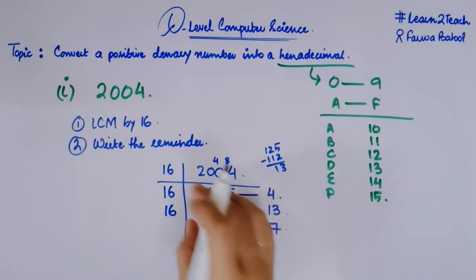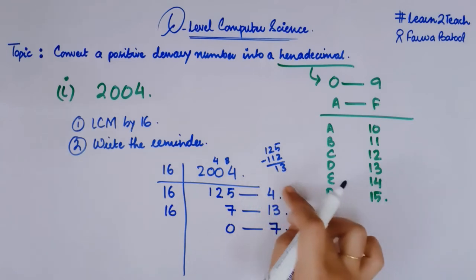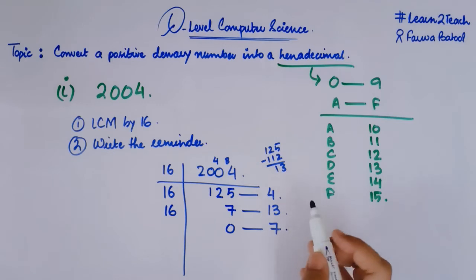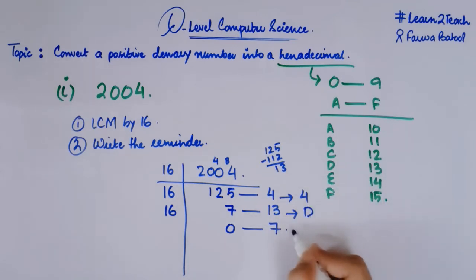Now after that what I need to do, I need to convert these numbers into hexadecimals. This 4 in hexadecimal notation would be equal to 4. It won't be converted. Then this 13 would be equivalent to what? It would be equivalent to D. So this 13 would be equal to D and this 7 would be 7. So I have represented these remainders in terms of hexadecimal digits.